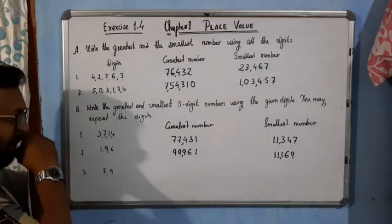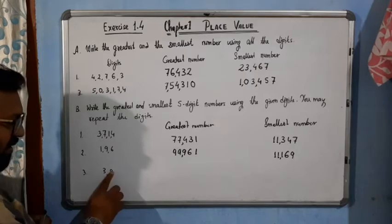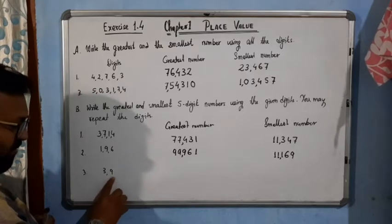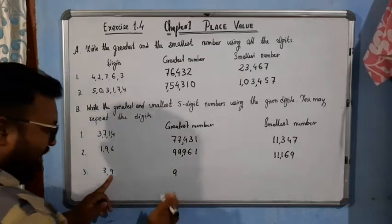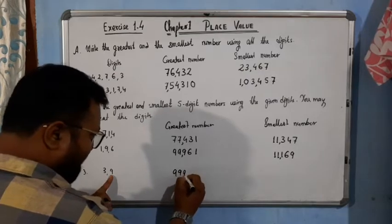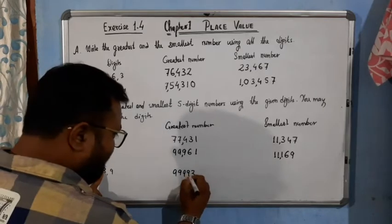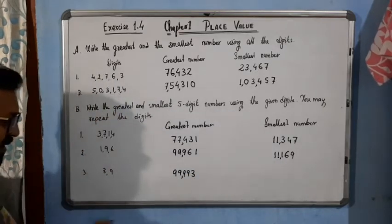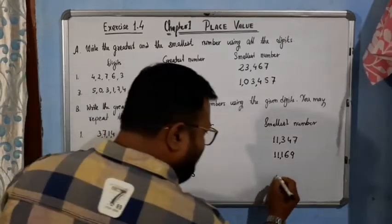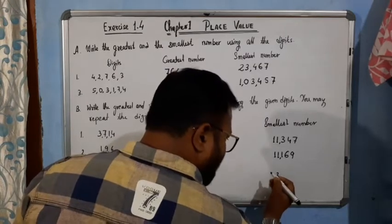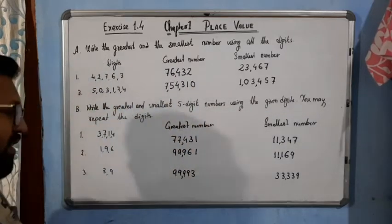For the next example, only 2 digits are given — 3 and 9 — so we need 3 more to make a 5-digit number. For the greatest number, I repeat 9 four times and then write 3: 9, 9, 9, 9, 3 — giving 99,993. For the smallest number, I repeat 3 four times and then write 9: 3, 3, 3, 3, 9 — giving 33,339.